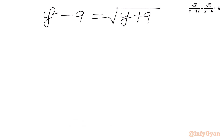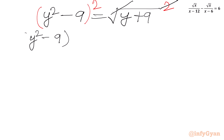Now we will square both sides, putting power 2 on both sides. On the right side the square root and square cancel, so we get (y squared minus 9) squared equal to y plus 9.